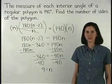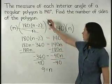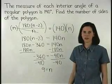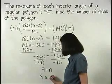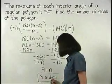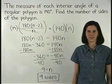So if the measure of each interior angle of a regular polygon is 140 degrees, then we know that the polygon has 9 sides.